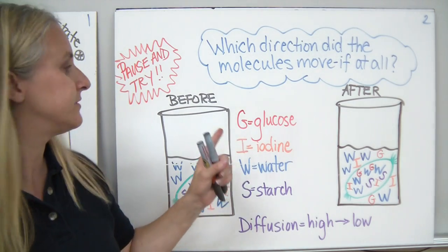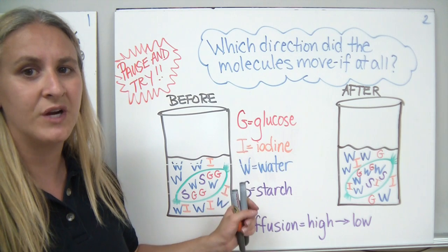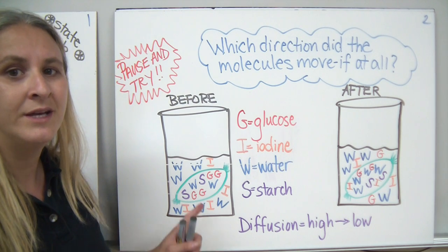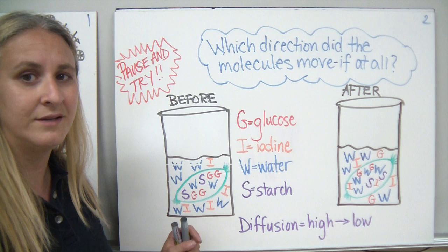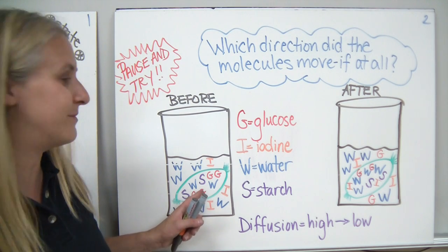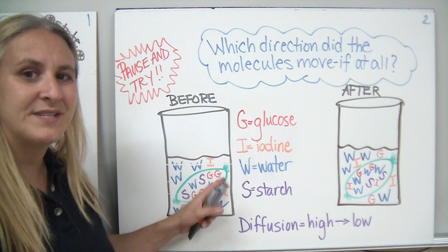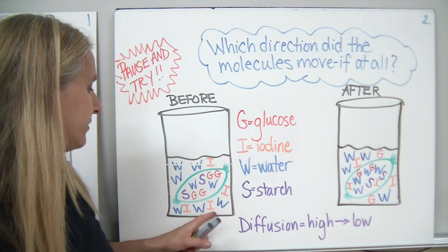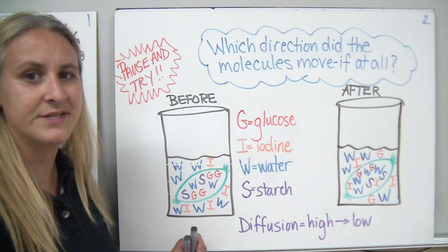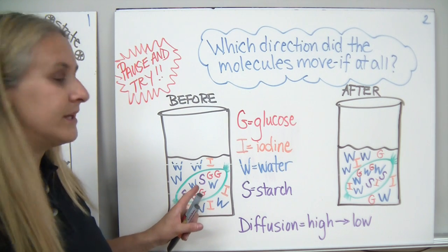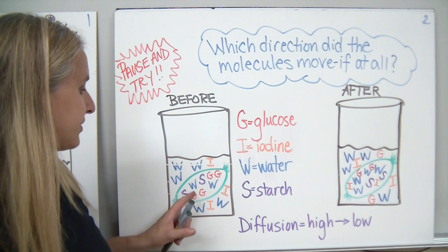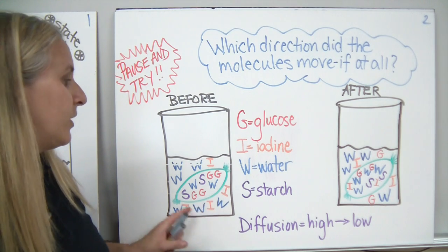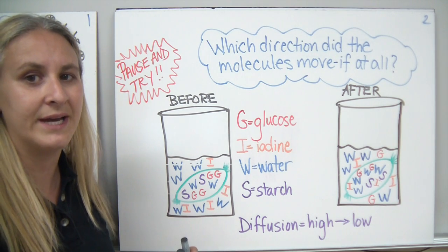As you can see in my example here, I used red for glucose, orange for iodine, blue for water, and purple for starch. There was a greater concentration of water outside than in, so I drew more water molecules outside of the baggie than inside. There was iodine in the solution — that amber or rusty colored substance added to the water — but there wasn't any inside at the start. Inside our simulated cell or plastic baggie, we had starch and glucose dissolved in water. There wasn't any starch or glucose outside of the bag at the beginning.